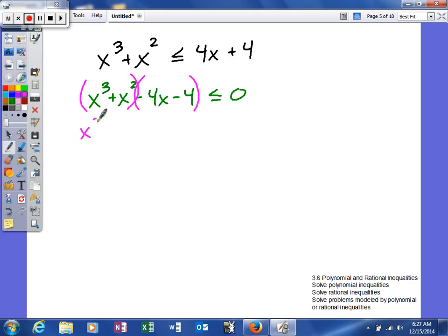So I will get x squared times x plus 1, factor out a negative 4, and x plus 1. At this point, I can group those together. That is difference of squares, so I can factor that.